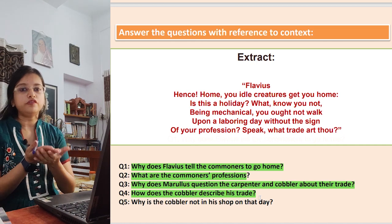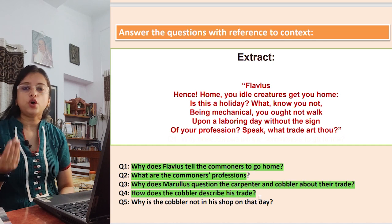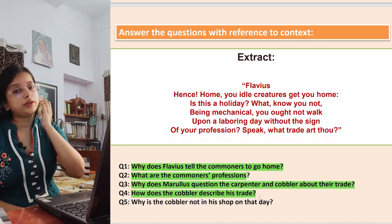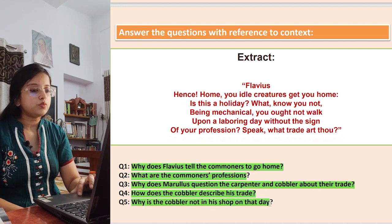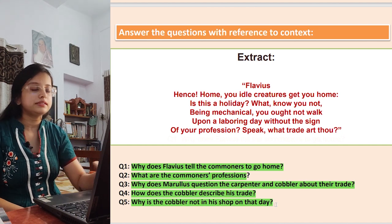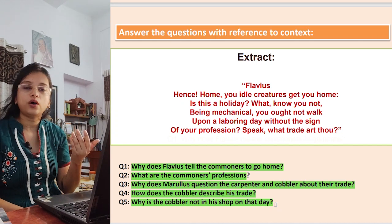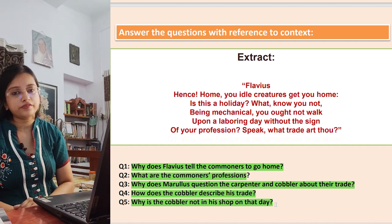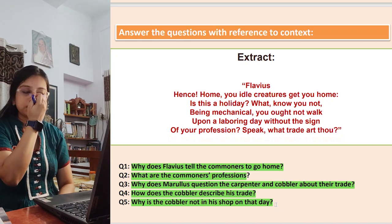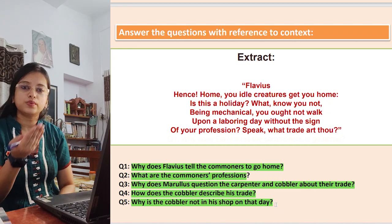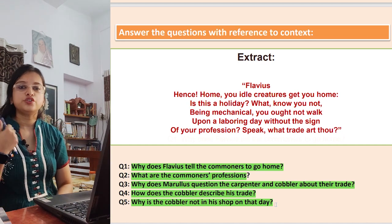The pun in 'mender of bad souls' is that he implies he can mend your soul spiritually, but he actually means the sole of a shoe. He also calls himself a surgeon — a doctor — to old shoes. Long Answer Q5: Why is the cobbler not in his shop? The cobbler explains that they are making a holiday to see Caesar and rejoice in his triumph over Pompey and his sons, to honor him as he returns — that is why they wear their best dress and are out.